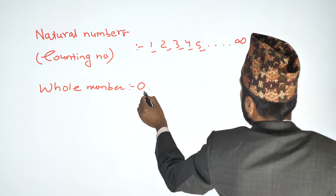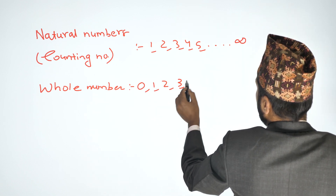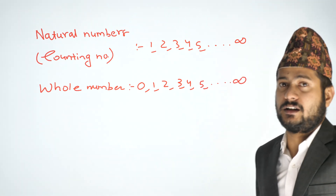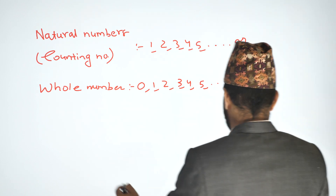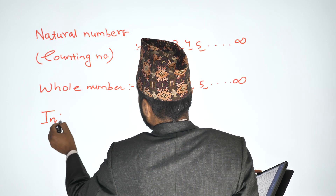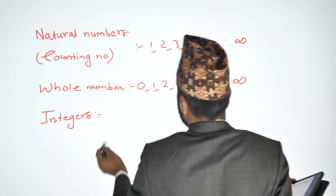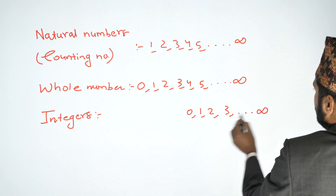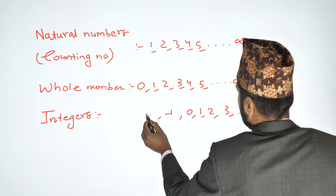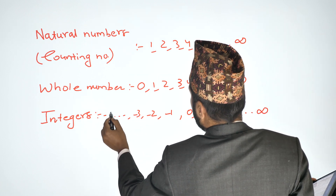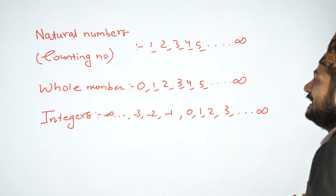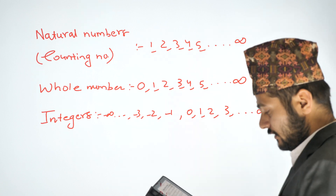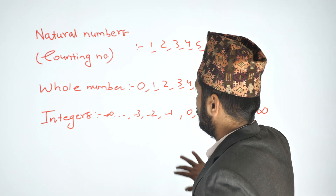Then there is the number 0. Numbers can be positive or negative. For example: negative numbers, 0, 1, 2, 3 — going from negative infinity. The combined set of positive numbers, zero, and negative numbers forms the integers.